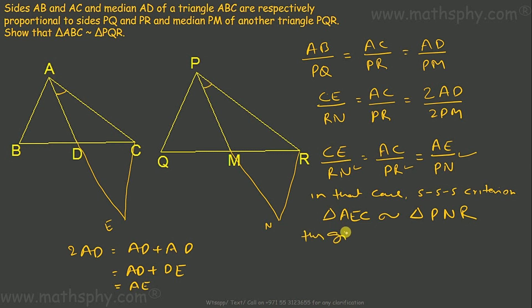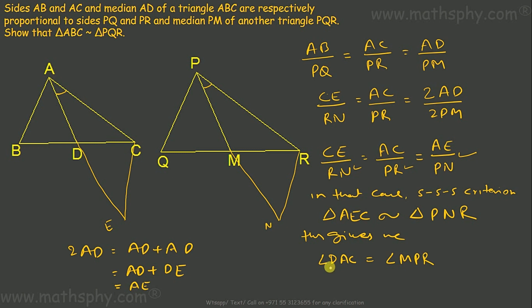Because triangles AEC and PNR are similar, we can extract that angle DAC equals angle MPR.